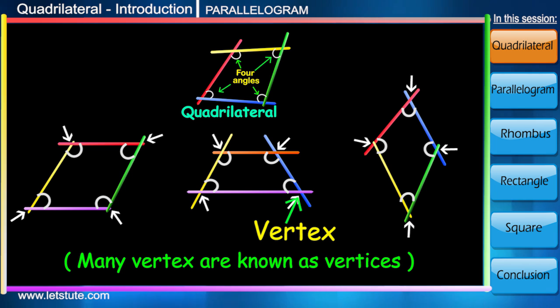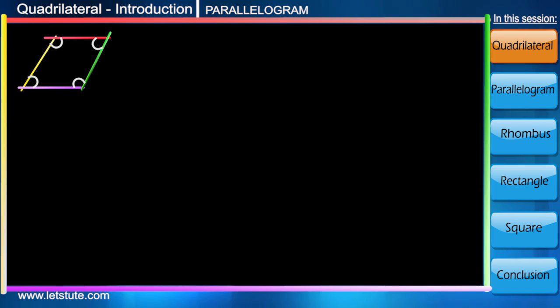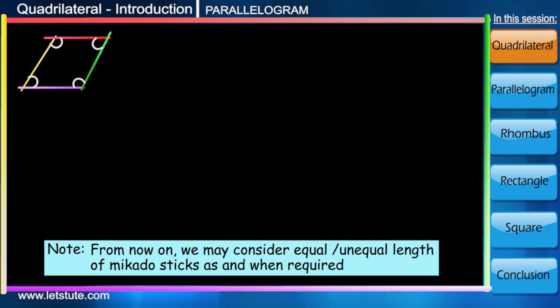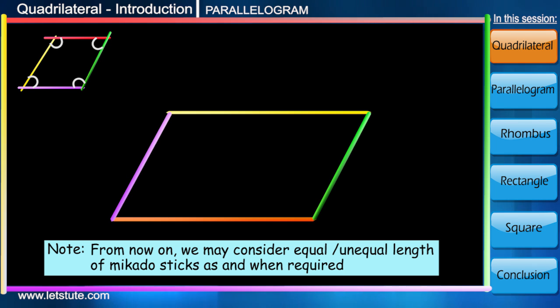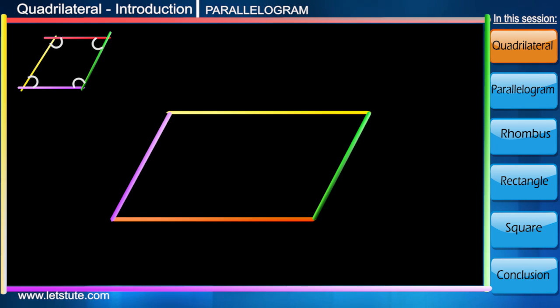Points where sides meet each other are called vertices. In this session, we are going to learn about the first type of quadrilateral. Now keep two sticks parallel to each other and another pair of parallel sticks above this so that it forms a quadrilateral.